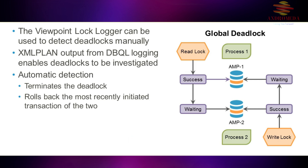Whichever one started first gets preference and is allowed to complete. The other one is simply rolled back, and you just have to request it again. By that time, the original transaction should have completed, hence avoiding the deadlock a second time.